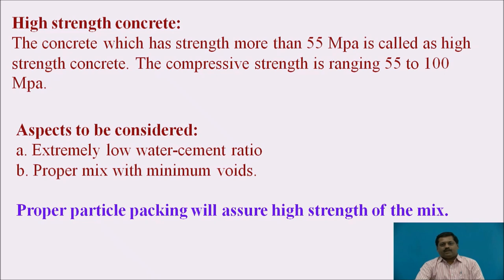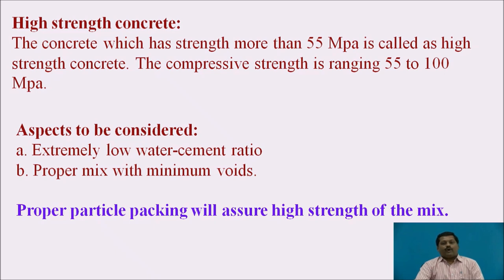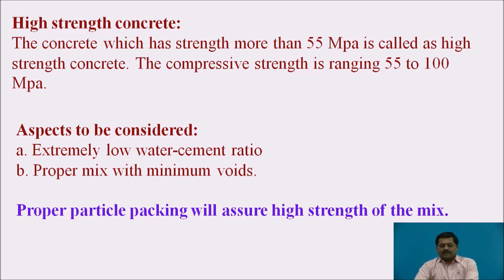The two major aspects of high-strength concrete are: first, low water-cement ratio or low water-binder ratio; and second, minimum voids. Voids are the sources where the bond between the cement matrix and aggregate fails, reducing strength. Minimum voids achieved through proper particle packing will assure high strength of the concrete.